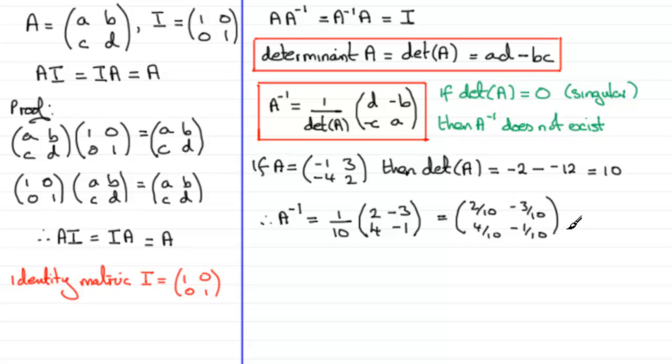Now it's worthwhile checking to see that this works. You could do A multiplied by the inverse matrix. In other words, A being minus 1, 3, minus 4, 2, and multiplying it by the inverse matrix. I'm going to use this version here: 2 tenths, minus 3 tenths, 4 tenths, and minus 1 tenth. You could even pause the video, try it yourself. See what you get.